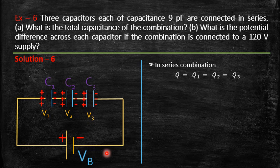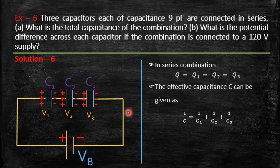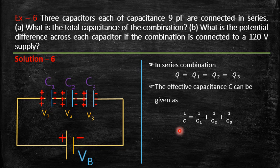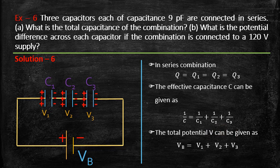For series combination, the effective capacitance is given by 1/C = 1/C₁ + 1/C₂ + 1/C₃. With C₁ = C₂ = C₃ = 9 pF, you can calculate C. For the potential, V_battery = V₁ + V₂ + V₃. Since all three capacitances are equal, the potential is distributed equally: V_battery = 3V, so each capacitor has potential V = 120/3 = 40 V. Substitute values and find your answer.